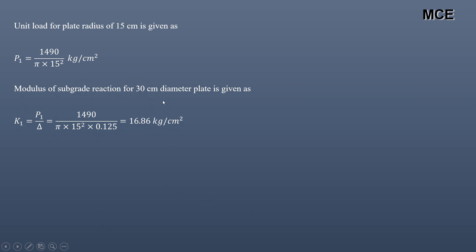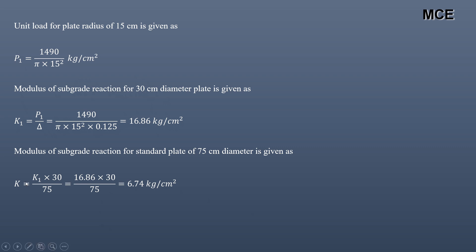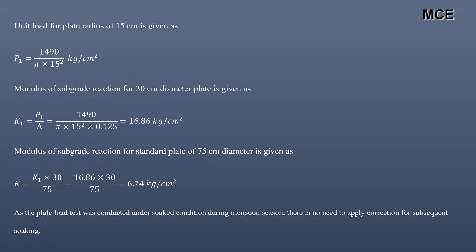Since the test is performed on a 30 cm plate but we need the value for the standard plate of 75 cm diameter, we apply the correction: K₇₅ = K₃₀ × (30/75) = 16.86 × (30/75) = 6.74 kg/cm³. This is the modulus of subgrade reaction for the standard plate of 75 cm diameter. Since the test was conducted under soaked conditions during the monsoon season, no correction for subsequent soaking is required.